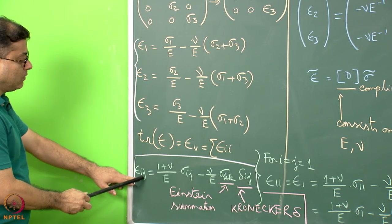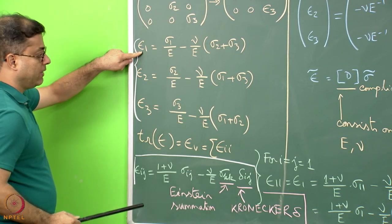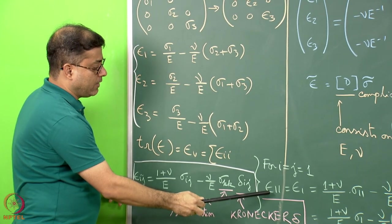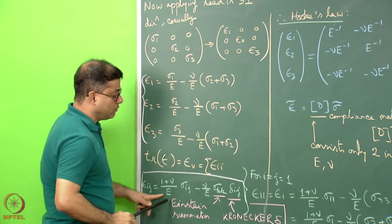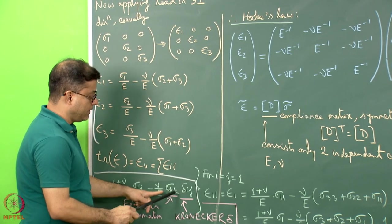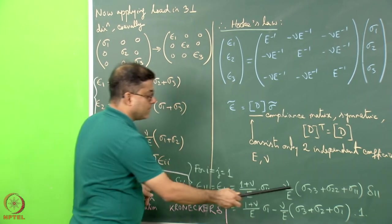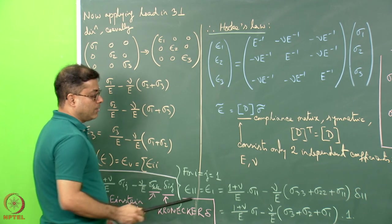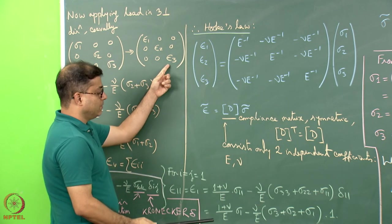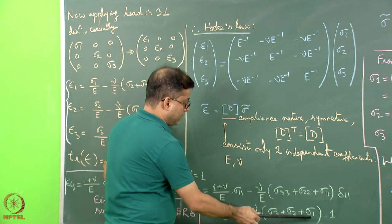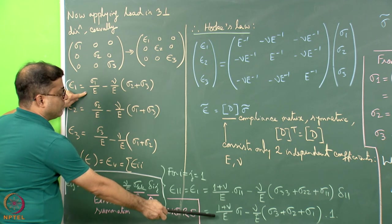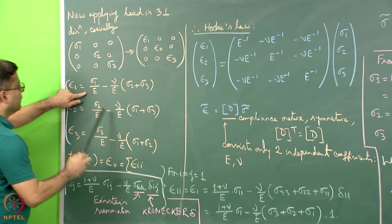To verify, put i equal to j equal to 1. Then epsilon_11 equals epsilon_1 equals (1 + nu)/E times sigma_11 minus nu/E times (sigma_11 + sigma_22 + sigma_33) times delta_11. Since delta_11 equals 1, and substituting sigma_11 = sigma_1, sigma_22 = sigma_2, sigma_33 = sigma_3, this simplifies to the expected epsilon_1 equation, confirming the formula is correct. Similarly, putting i = j = 2 gives epsilon_2, and i = j = 3 gives epsilon_3.